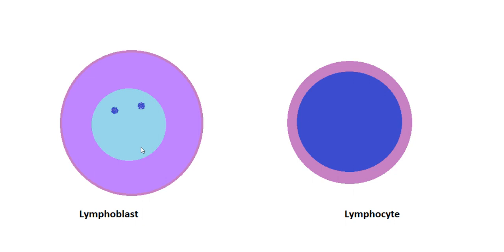This is a lymphoblast: its nucleus is light staining, contains nucleoli, and most of the cytoplasm is occupied by densely packed chromatin with a darkly stained nucleus. That is all about the germinal center. If you liked this video, please press the like button and subscribe to my channel. Thank you for watching.